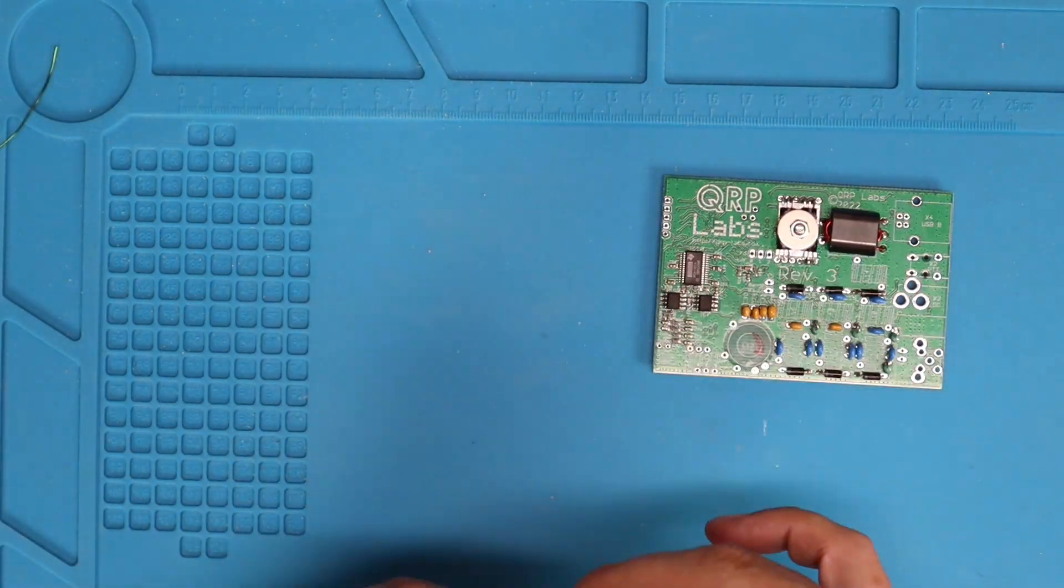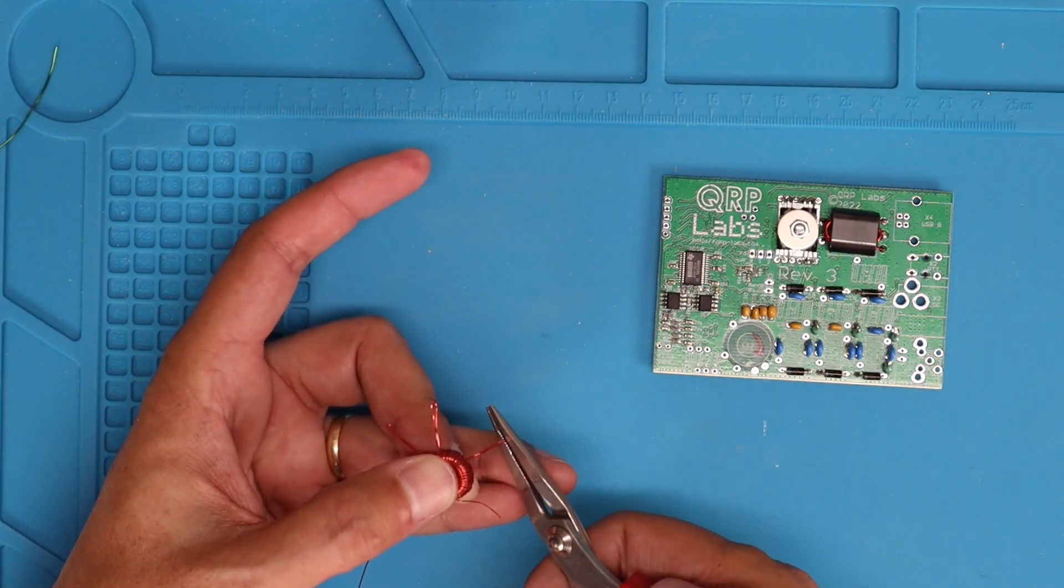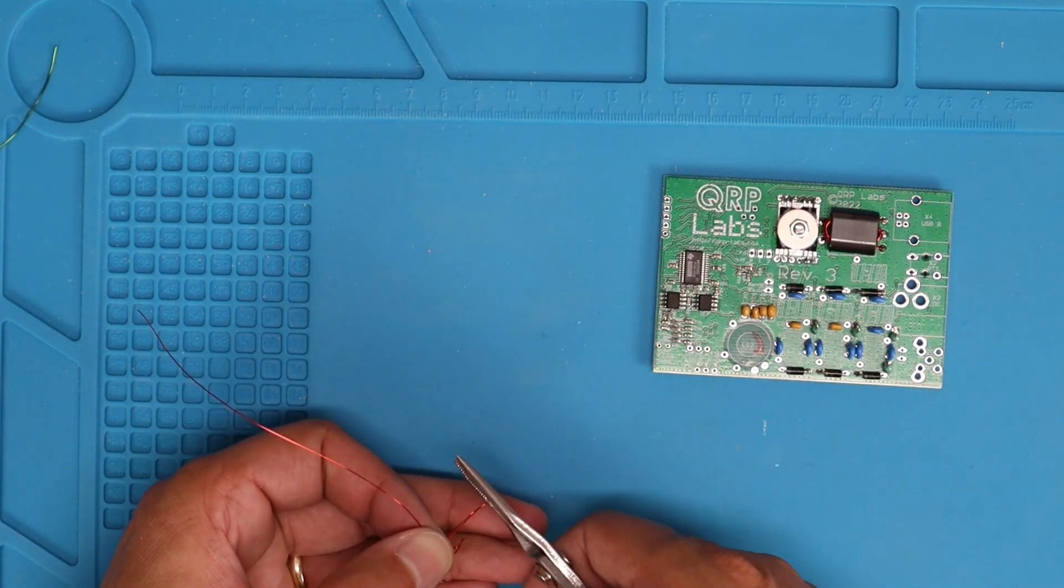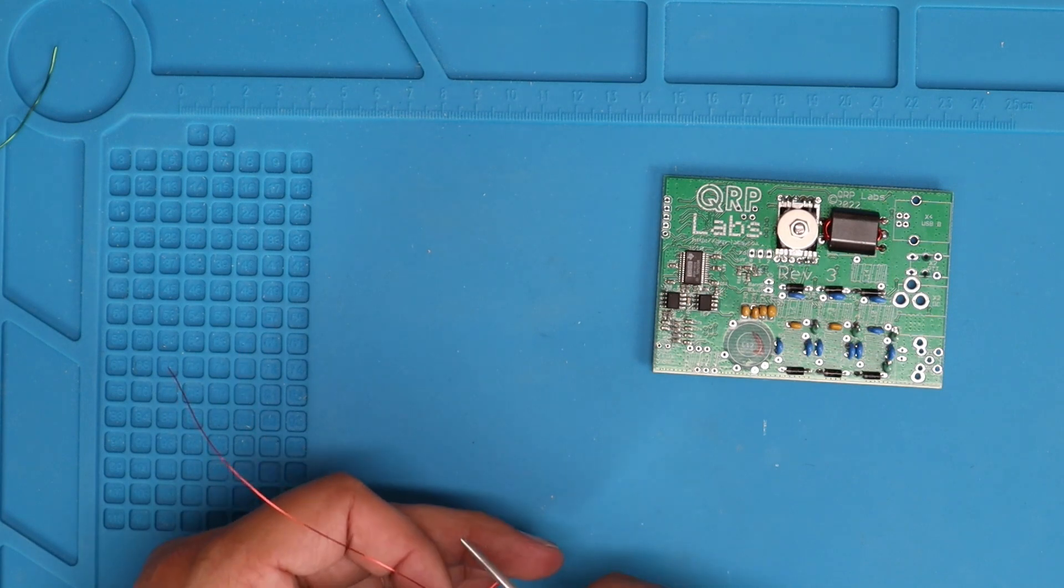So the next thing to do is to pinch the ends of these loops together so that they'll fit through the holes in the PC board. You don't need to cut these like you did on the larger one. They should fit if you get them nice and tight point at the end of them.